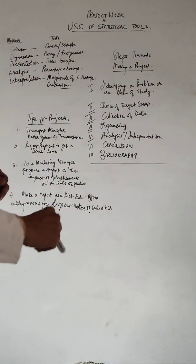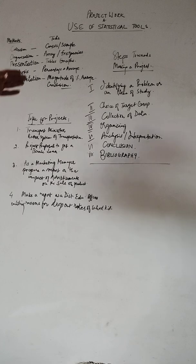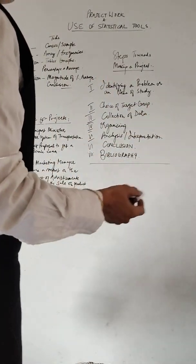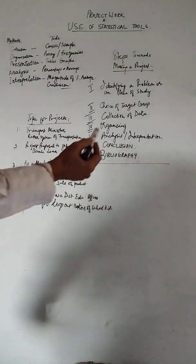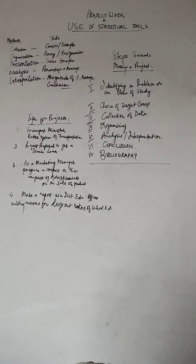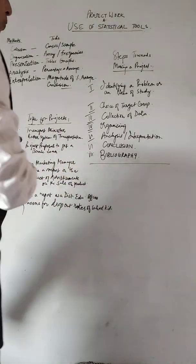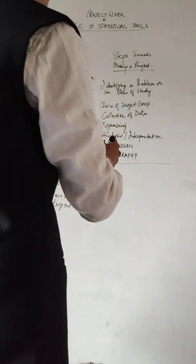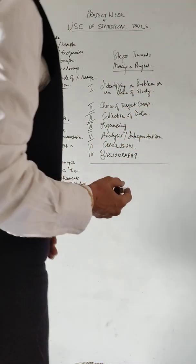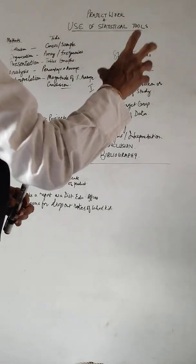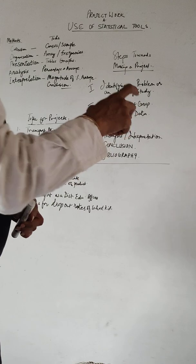These are the stages of making a project. First, identify a problem or area of study — something that impacts you or that your teacher has assigned. You want to really know something about it. Then you choose your target group: whether you're studying the rich, the poor, the middle class, students, businessmen, or farmers — you choose the group you're going to make your study on.